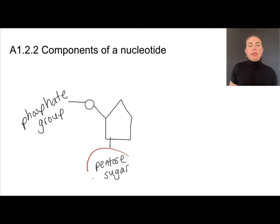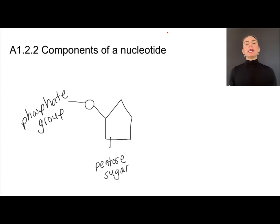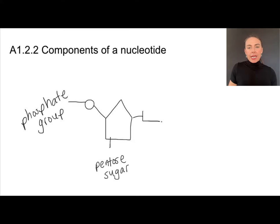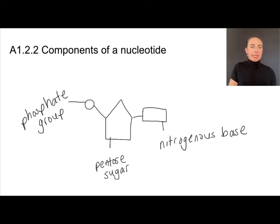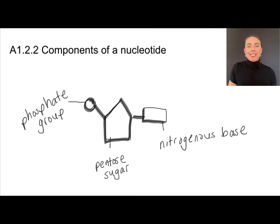Pentose sugar is a general term for this generic nucleotide. Once we get into RNA or DNA specifically, we'll replace the name with the actual sugar. Attached to the other side of the pentose sugar, there is one of four nitrogenous bases. So a nucleotide consists of a five-sided pentose sugar connected to a phosphate group and a nitrogenous base.